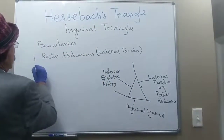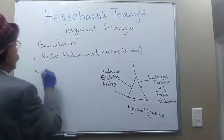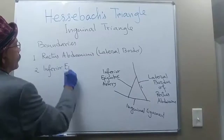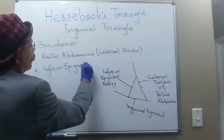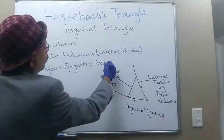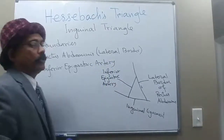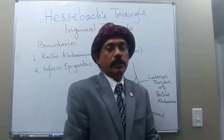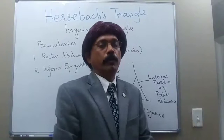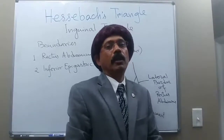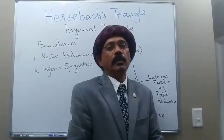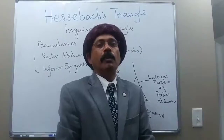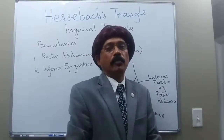Number two is the inferior epigastric artery. The inferior epigastric artery is a branch of the external iliac artery. It passes as a content of the rectus sheath, behind the rectus abdominis muscle, and around the umbilicus it anastomoses with the superior epigastric artery, which is a terminal branch of the internal thoracic artery.